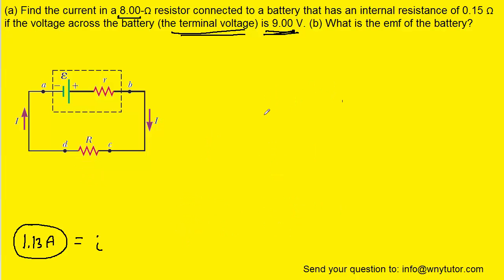And now we can move on to part B, which asks us to determine the EMF of the battery. Remember that the EMF is symbolized by this funny looking E, which is shown right here in the diagram. And one way of solving this is to apply the so-called loop rule.